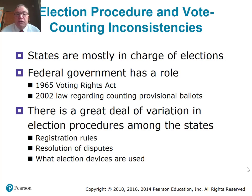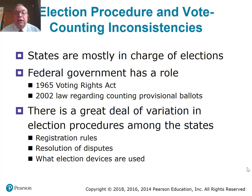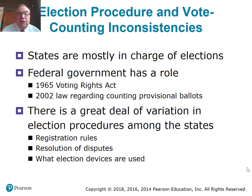States are in charge of elections, and that is part of the reason for the inconsistency. The federal government has stepped in from time to time — with the 1965 Voting Rights Act, which made African Americans' right to vote truly enforceable, and a 2002 law regarding provisional ballots. If you've moved recently, you can go to the poll and vote provisionally, and your vote can be counted afterwards if you have in fact moved. There is great variation across states about who registers, how you register, and how disputes are decided.